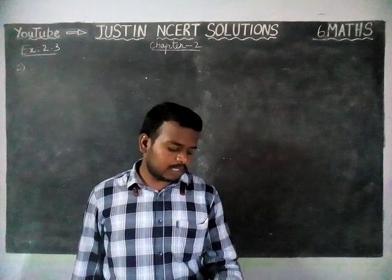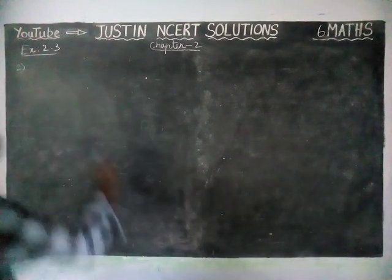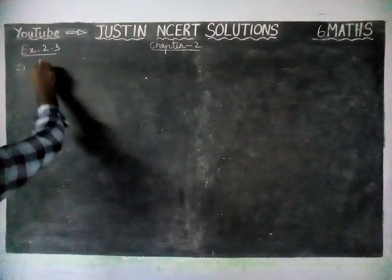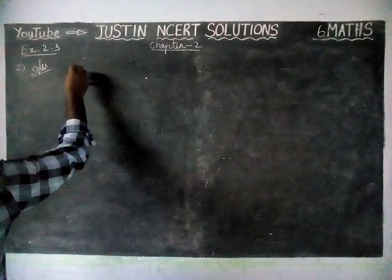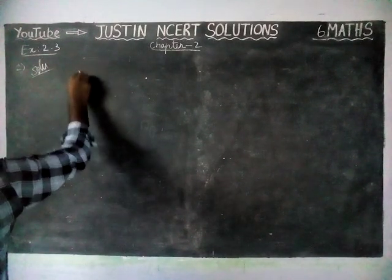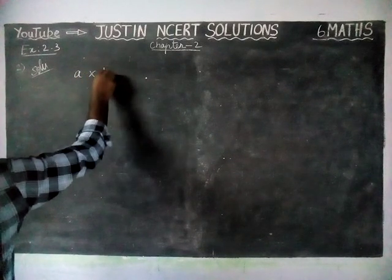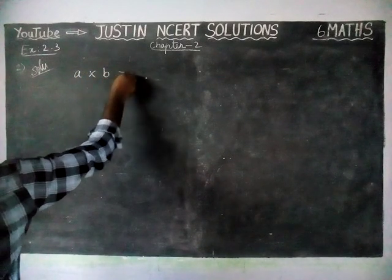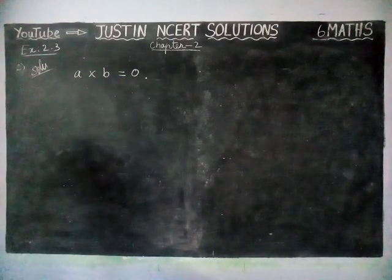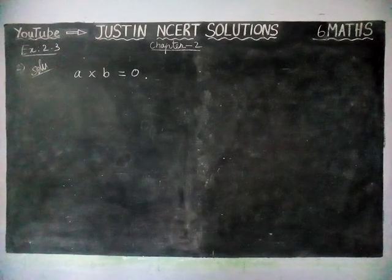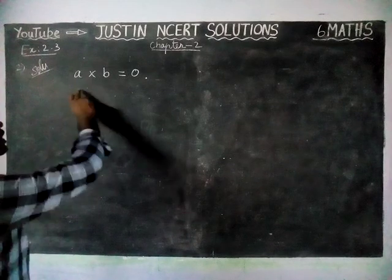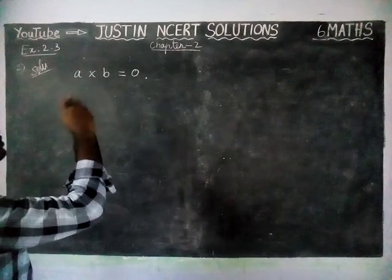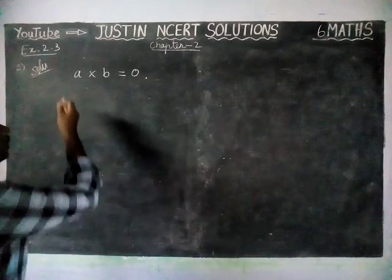Justify through examples. We are going to take the product of two whole numbers — one whole number as A and another whole number as B — and say the answer is 0. If the product of two whole numbers is 0, can we say that any one or both of them are 0? We are going to check it.